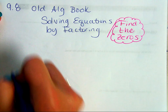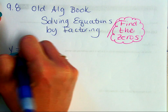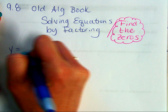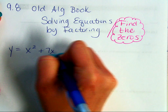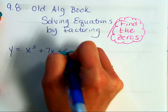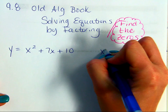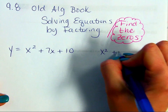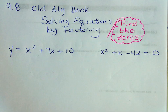You're going to see two types of equations. It'll either say y equals x squared plus 7x plus 10, or you may see it written as x squared plus x minus 42 equals 0.